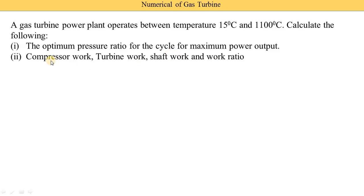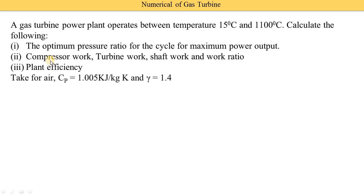Second, we need to calculate compressor work WC, turbine work WT, shaft work (net work), and the work ratio WR. Finally, we need to calculate the plant efficiency, i.e., thermal efficiency. We also need to consider that CP for air is equal to 1.005 kJ per kg·Kelvin and gamma is equal to 1.4.